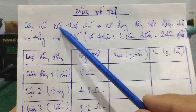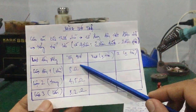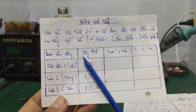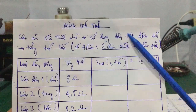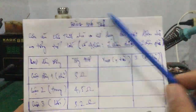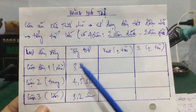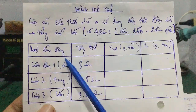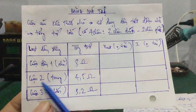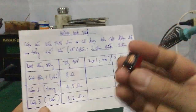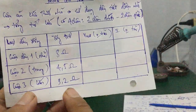Các bạn thấy không: cuộn dây nhỏ nhất đo được 8 Ohm, cuộn chung đo được 4,5 Ohm, cuộn lớn nhất đo được 3,2 Ohm. Có nghĩa là cuộn kích thước nhỏ - tiết diện nhỏ, số vòng dây nhiều - thì tổng trở lớn hơn. Cuộn nhỏ nhất có tổng trở lớn nhất, cuộn lớn nhất chỉ có 3,2 Ohm.